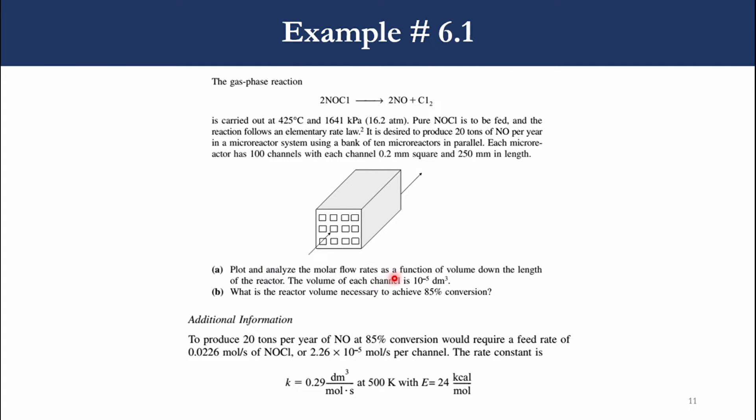Plot and analyze the molar flow rates as a function of volume down the length of reactor. The volume of each channel is 10 to minus 5 cubic decimeter. Number two, what is the reactor volume necessary to achieve 85% conversion? Additional information: to produce 20 tons per year of NO at 85% conversion requires a feed rate of 0.0226 mole per second or 2.26 times 10 minus 5 mole per second per channel. The rate constant value is 0.29 cubic decimeter per mole per second at 500 kelvin with activation energy as 24 kilocalories per mole.